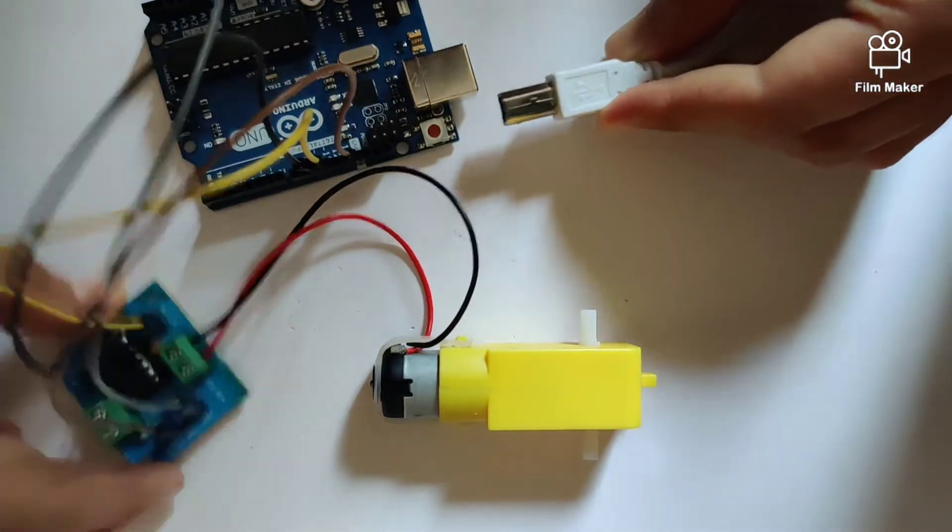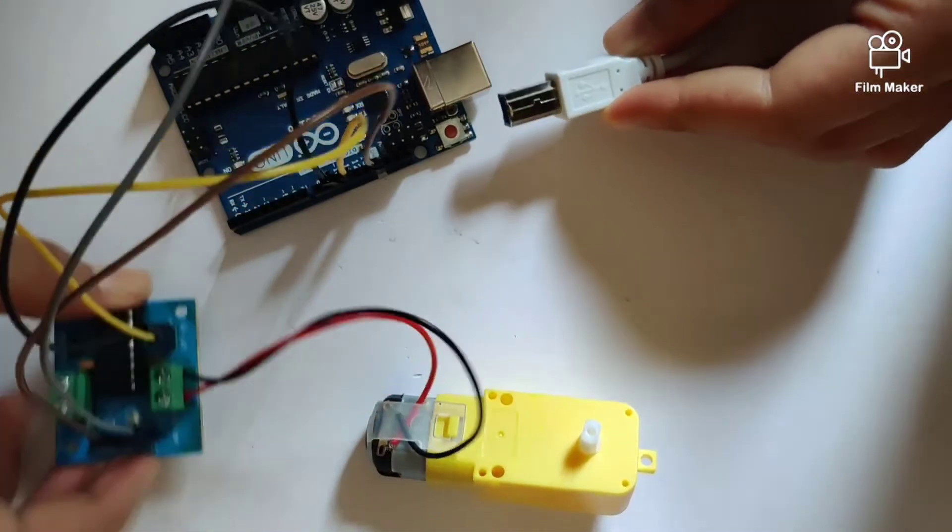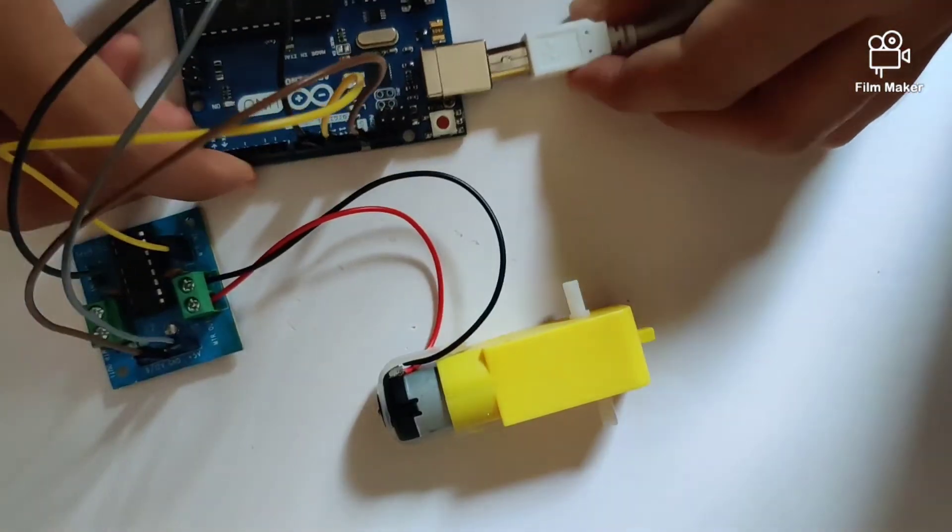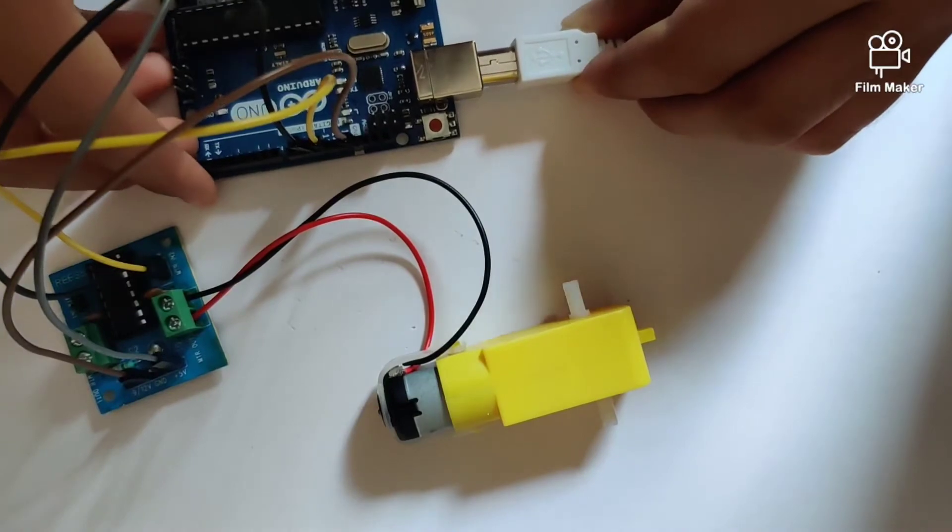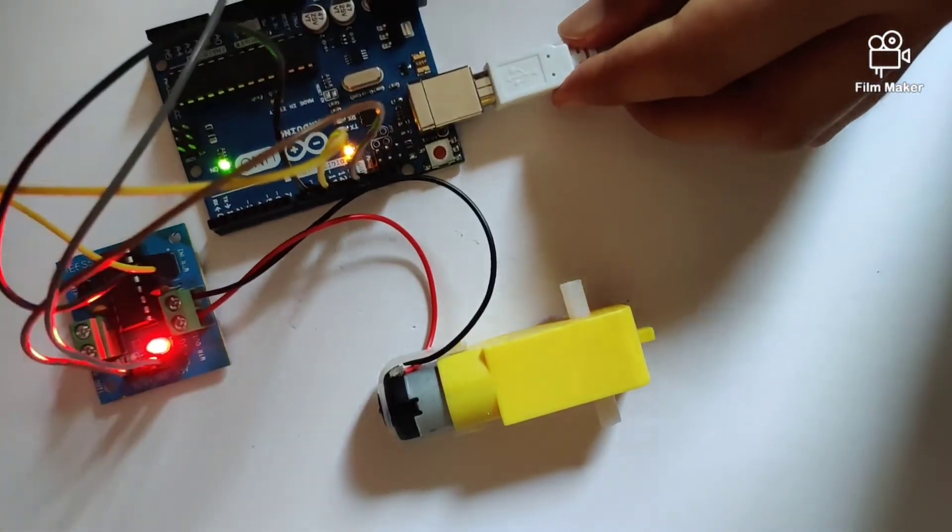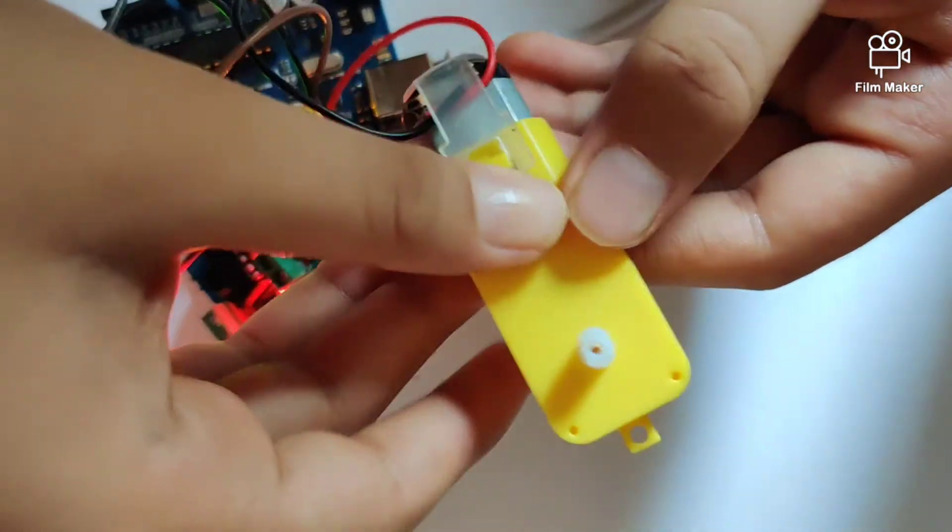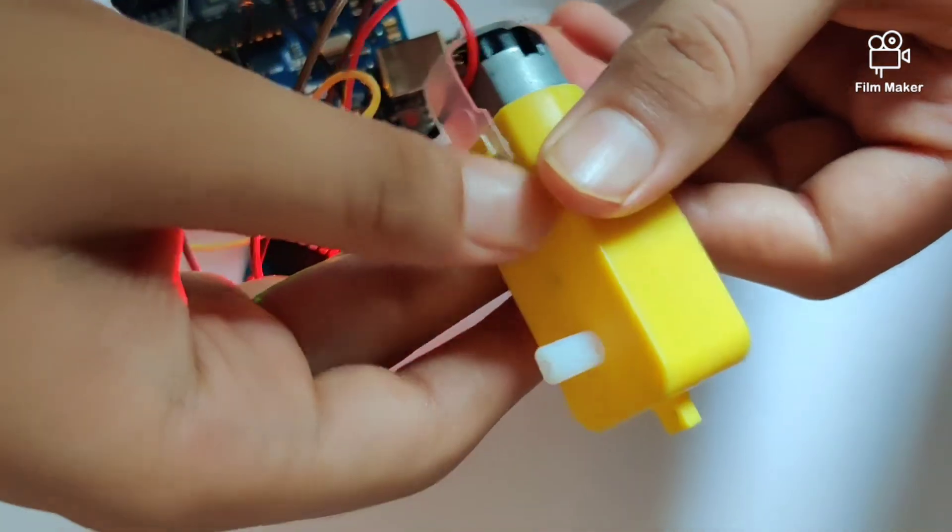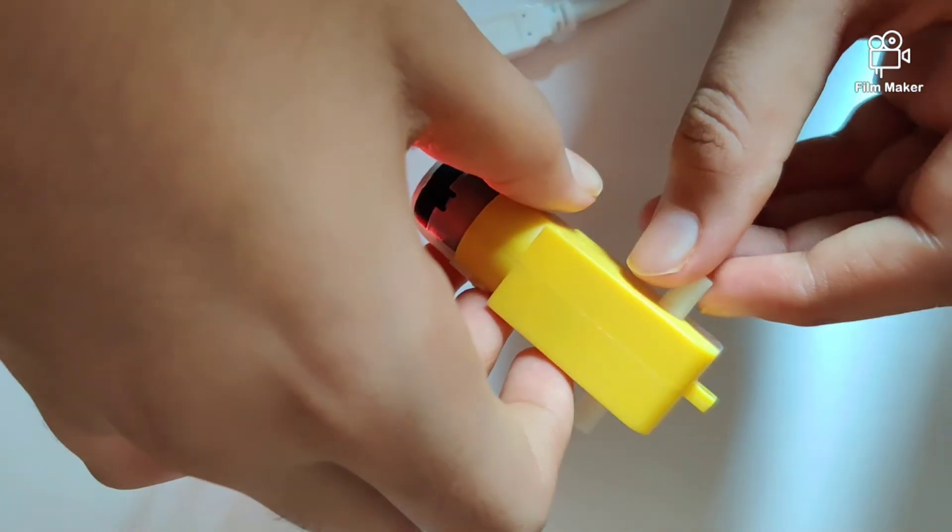Once we do that, a red light will appear on the motor driver, which is when we upload our program for the motor to run. So once I upload the program, our motor will start rotating in different directions.